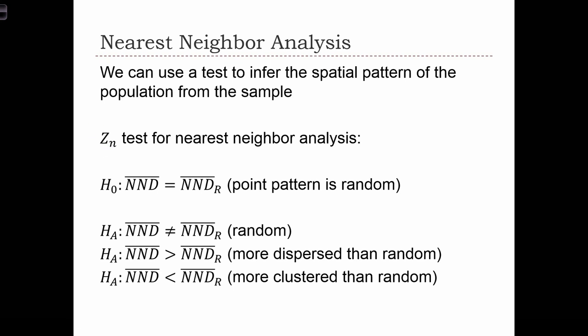In this case, it's a standard test where we normalize the nearest neighbor distance into a z-score. Then we know how the z-score is distributed, so we can use the normal curve to conduct a hypothesis test. The null hypothesis is that the data are random, so NND bar equals NND bar R.